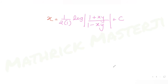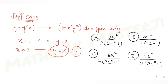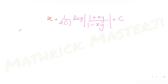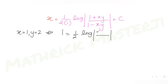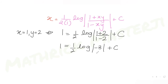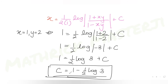Now applying the first condition: when x = 1 and y = 2, substituting gives 1 = (1/2) log|(1 + 2)/(1 - 2)| + C = (1/2) log|3/(-1)| + C = (1/2) log 3 + C. So C = 1 - (1/2) log 3.